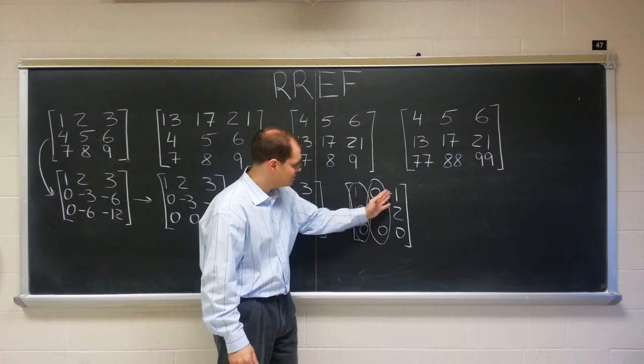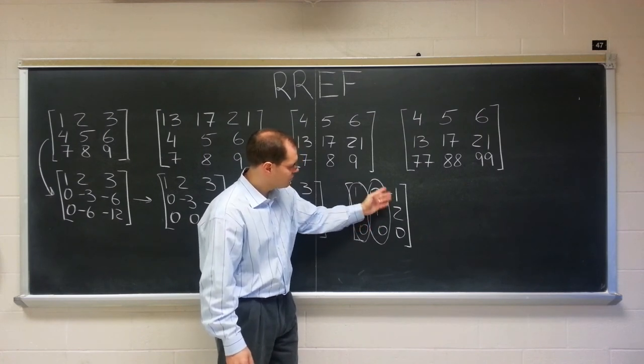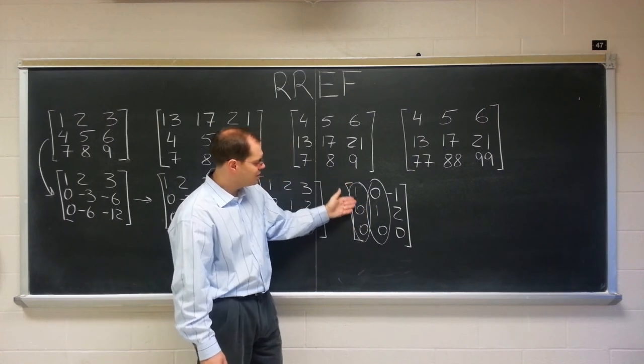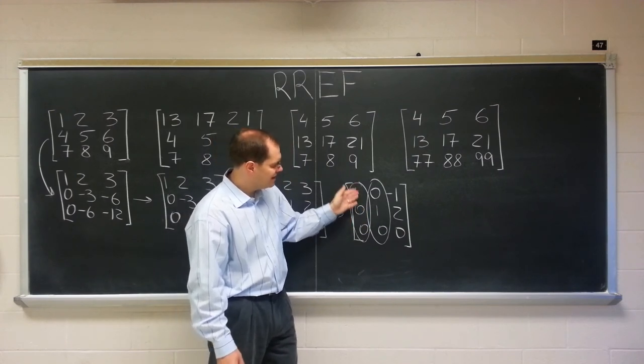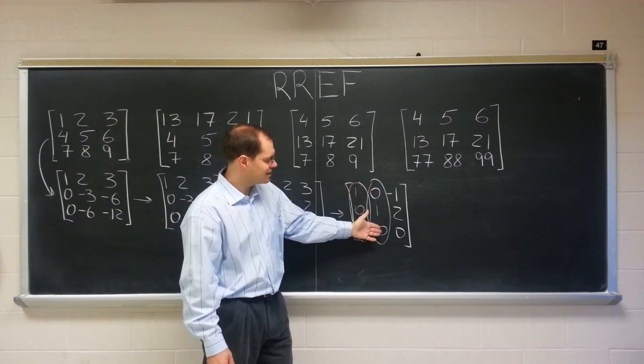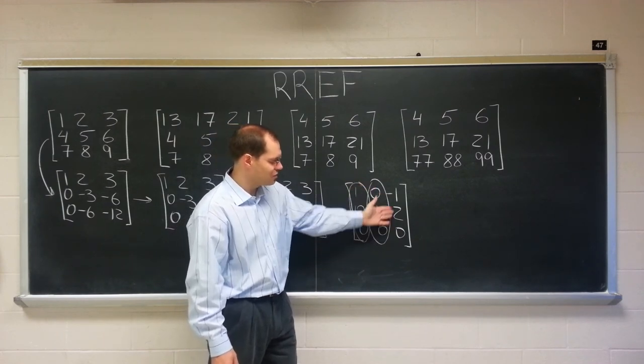And it's very clear that we need to take two, well let's just go in order, that in order to express the third column, we need one, excuse me, we need negative one of the first column, two of the second column, that would give us the third column.